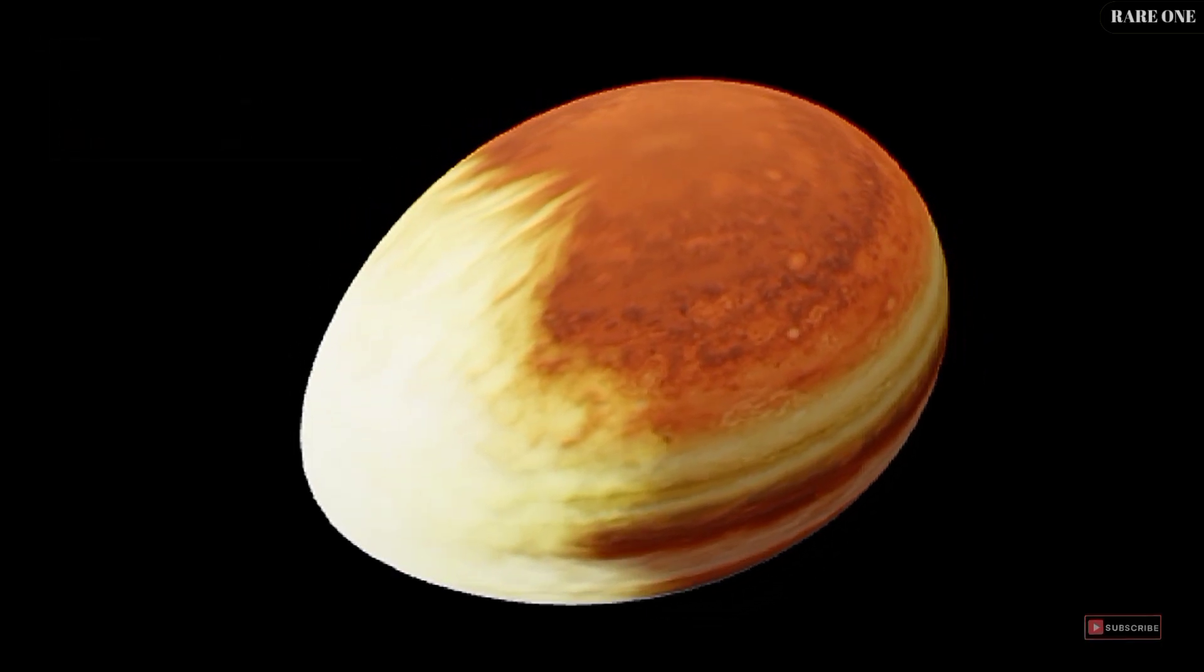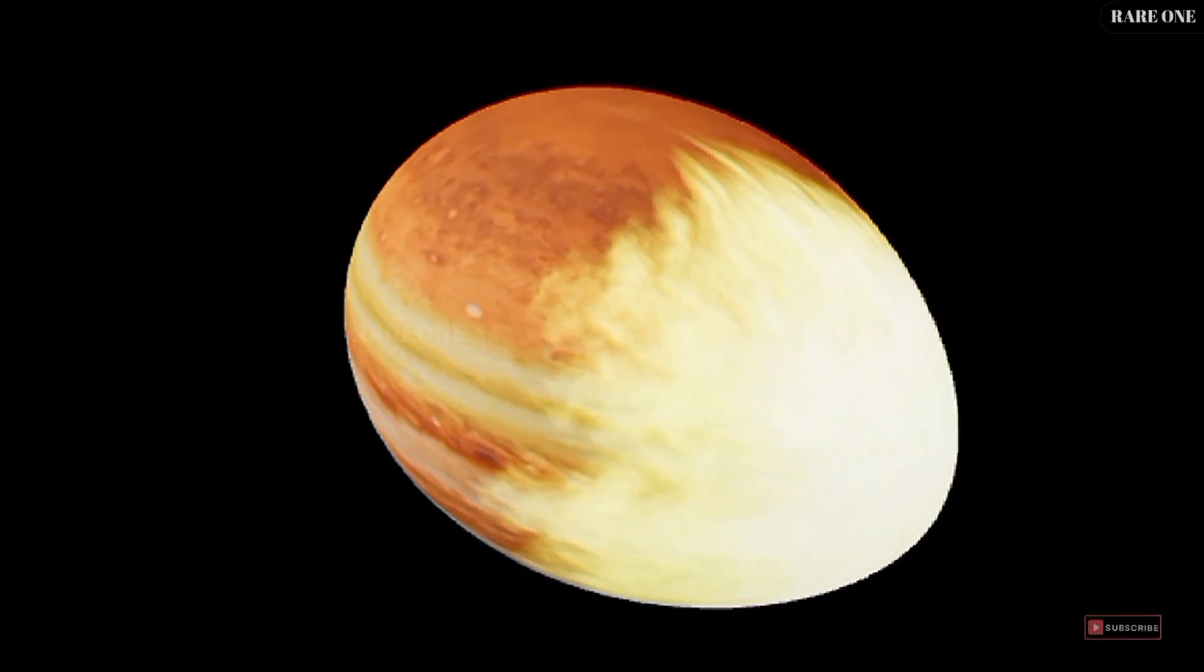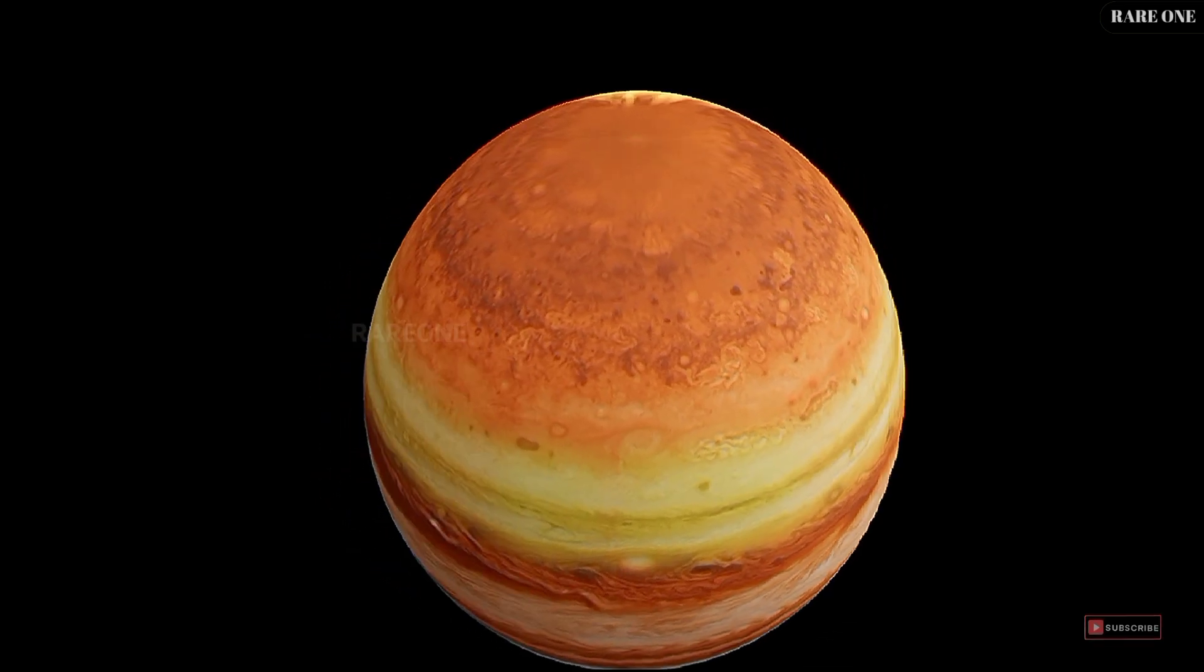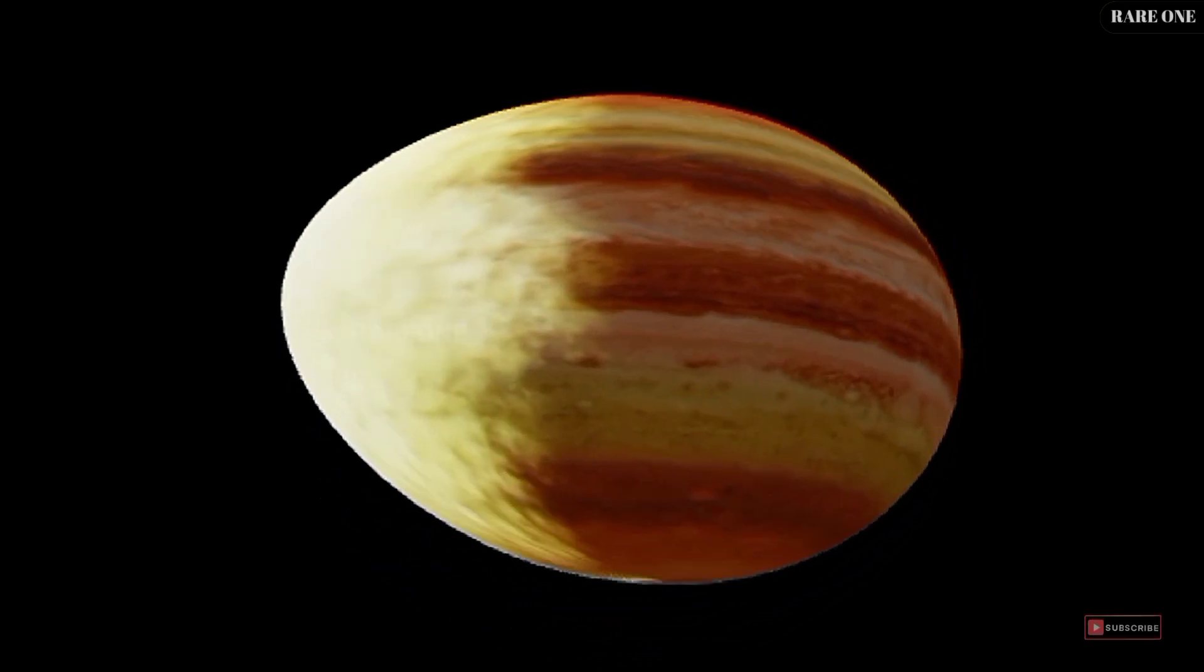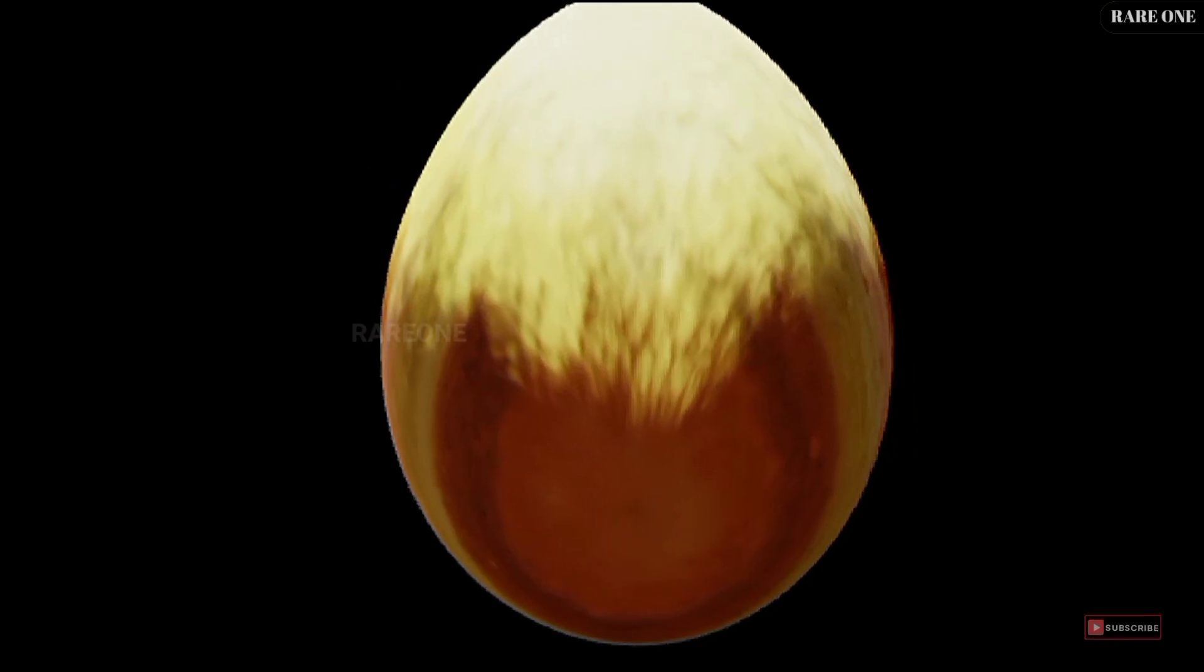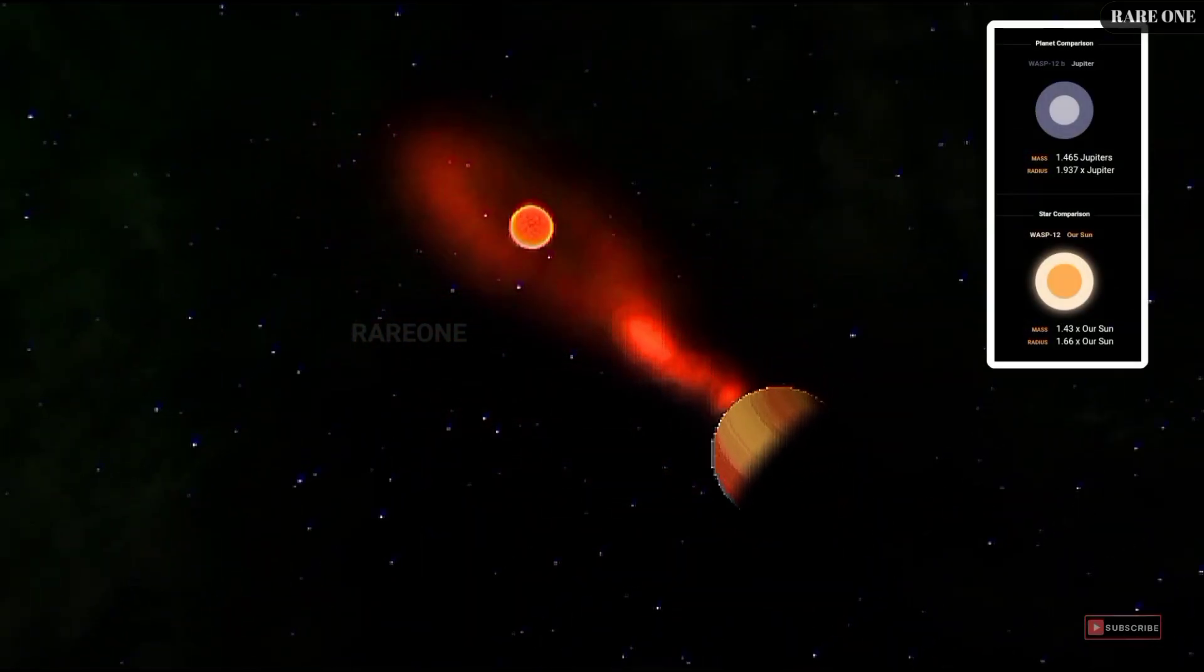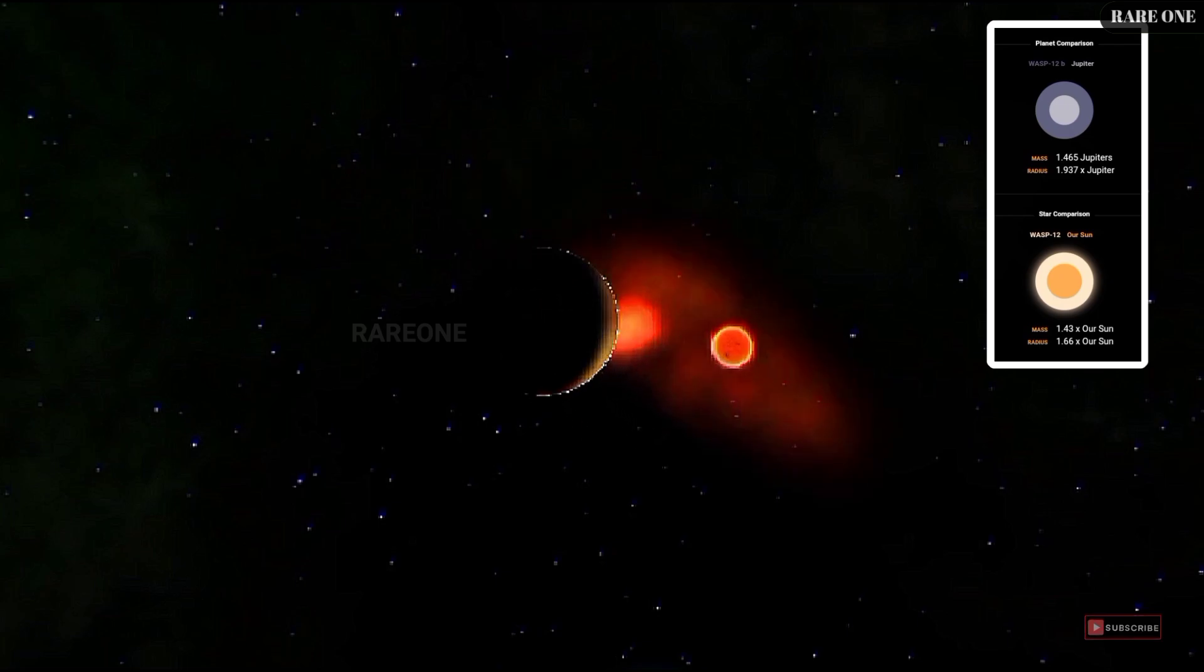The tidal forces acting on WASP-12b are so immense that they are stretching the planet into the shape of an egg. Can you imagine a world that is not spherical but resembles an egg? This deformation is a result of the incredible gravitational pull exerted by the parent star.